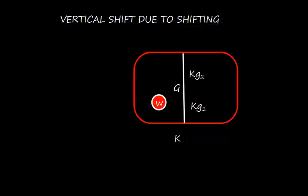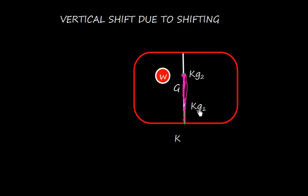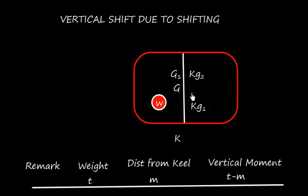Let us assume this vessel has some small weight w, and I am shifting this weight vertically upward. Initially this weight was at a location where the distance from keel is KG1. When I shift it vertically upward, the new distance from keel is KG2. So I shift something from this position to this position.